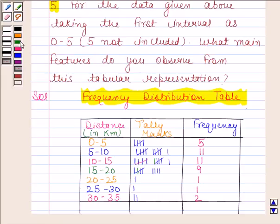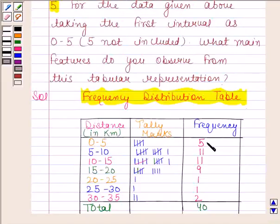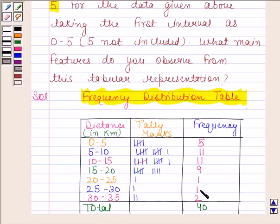The total frequency is 40. So we get that 5 engineers live within 0 to 5 kilometers, 11 engineers live within 5 to 10 kilometers, 11 engineers live within 10 to 15 kilometers, 9 engineers live within 15 to 20 kilometers, 1 engineer lives within 20 to 25 kilometers, 1 engineer lives within 25 to 30 kilometers, and 2 engineers live within 30 to 35 kilometers. We can conclude that most of the engineers live within 5 to 10 or 10 to 15 kilometers, and very few live within 20 to 35 kilometers.